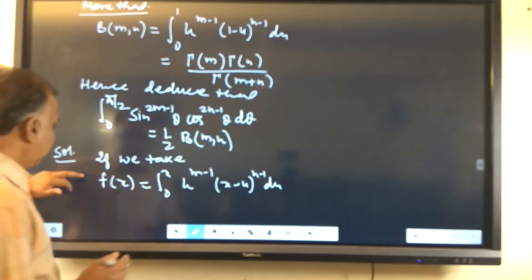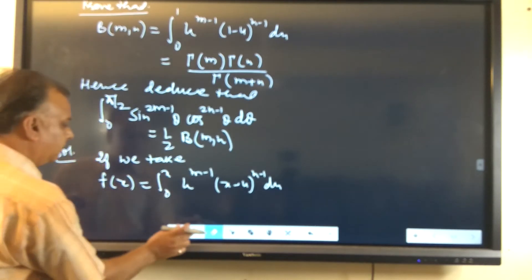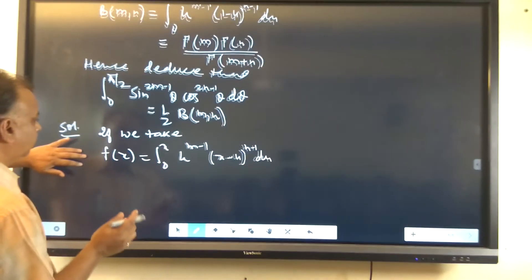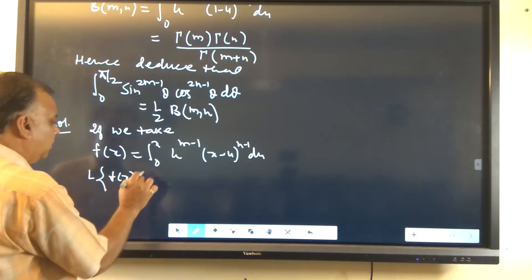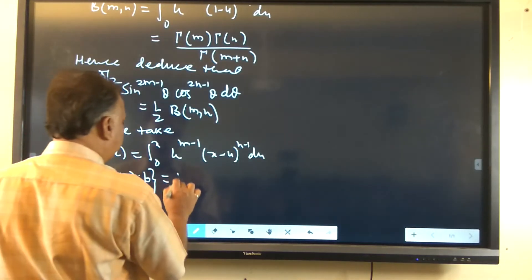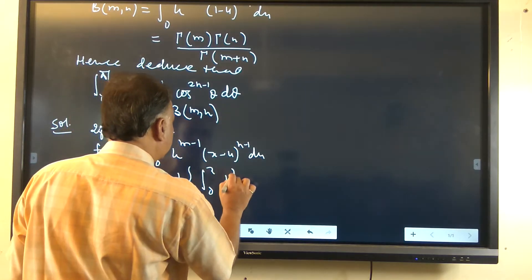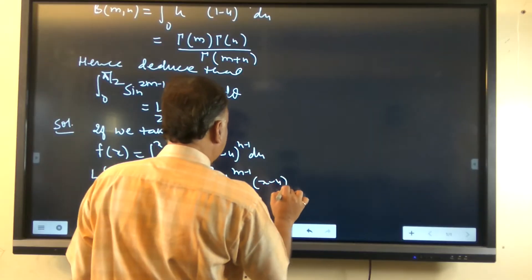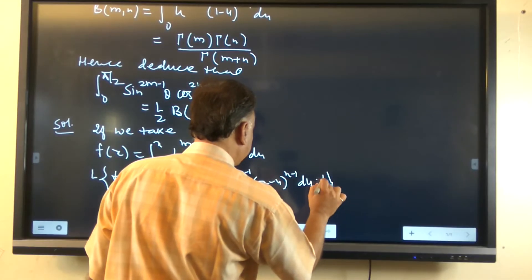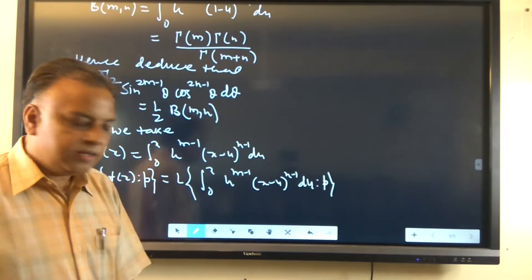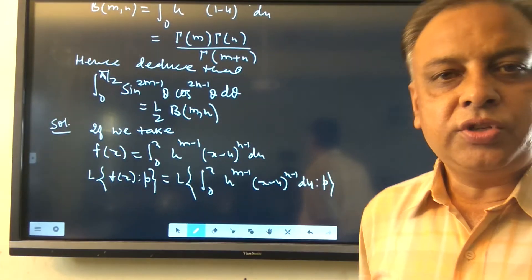Taking the Laplace transformation of f(x) with respect to p equals the Laplace transformation of the integral from 0 to x of u^(m-1) times (x-u)^(n-1) du. We see that this Laplace transformation of the integral is in the form of the convolution theorem.